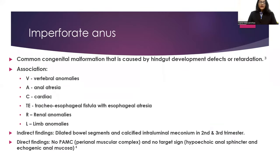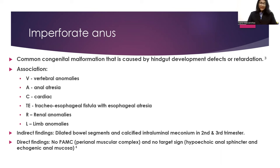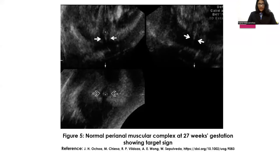Imperforate anus is a common congenital malformation caused by developmental defects in association with VACTERL abnormalities — standing for vertebral anomalies, anal atresia, cardiac anomalies, tracheoesophageal fistula with esophageal atresia, renal anomalies, and limb anomalies. Indirect findings are dilated bowel segments and calcified intraluminal meconium in the second and third trimester. Direct findings include no perianal muscular complex and no target sign, signified by a hypoechoic anal sphincter and an echogenic anal mucosa, as shown in the image.